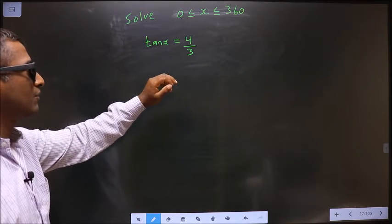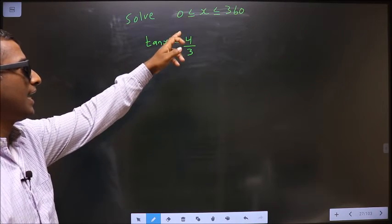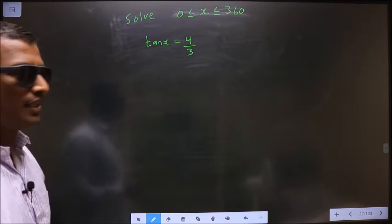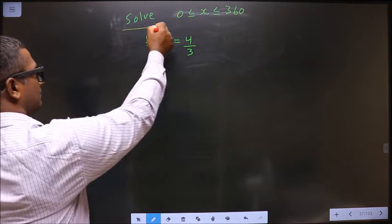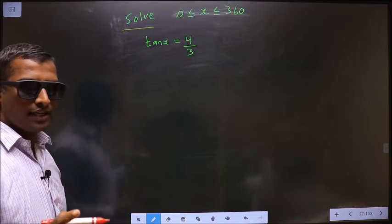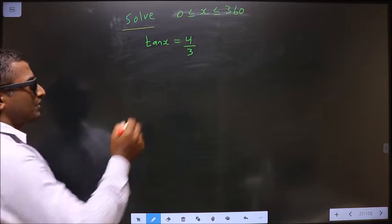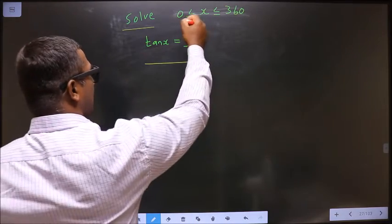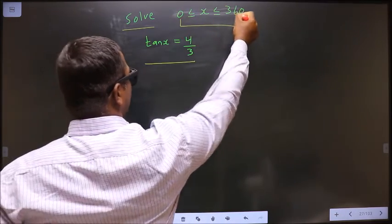Solve tan x equals 4/3, where x lies between 0 to 360 degrees. You need to find the values for x satisfying this equation and lying in this interval.